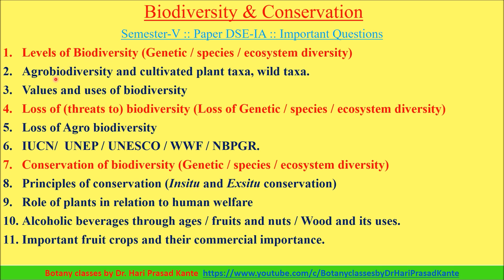The second question is agrobiodiversity and cultivated plant taxa and wild taxa. Agrobiodiversity definition — Yavsaya Jeeva Vaivijyam — covers cultivated plants and wild relatives.